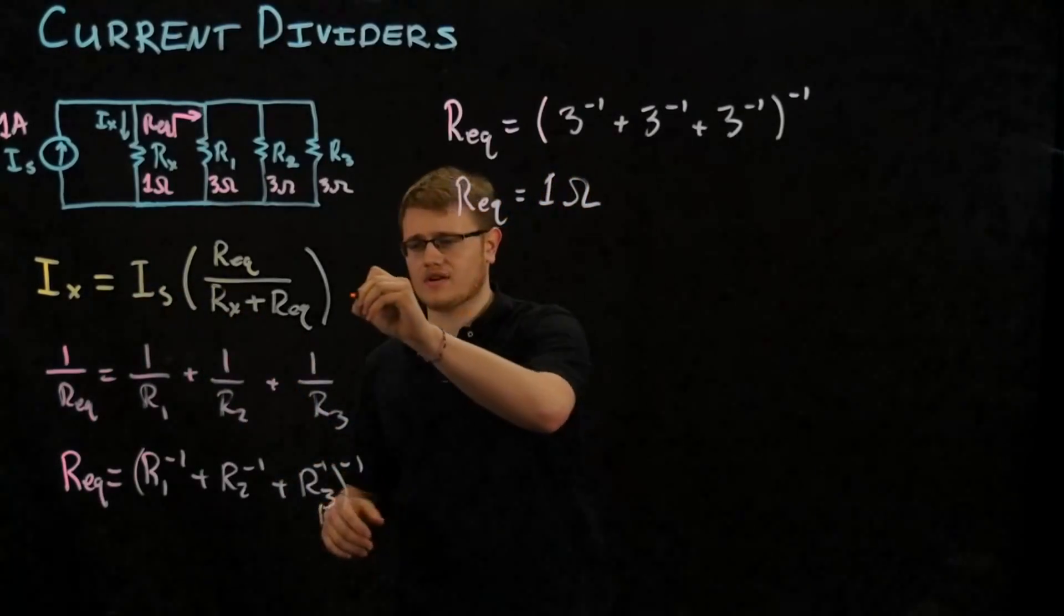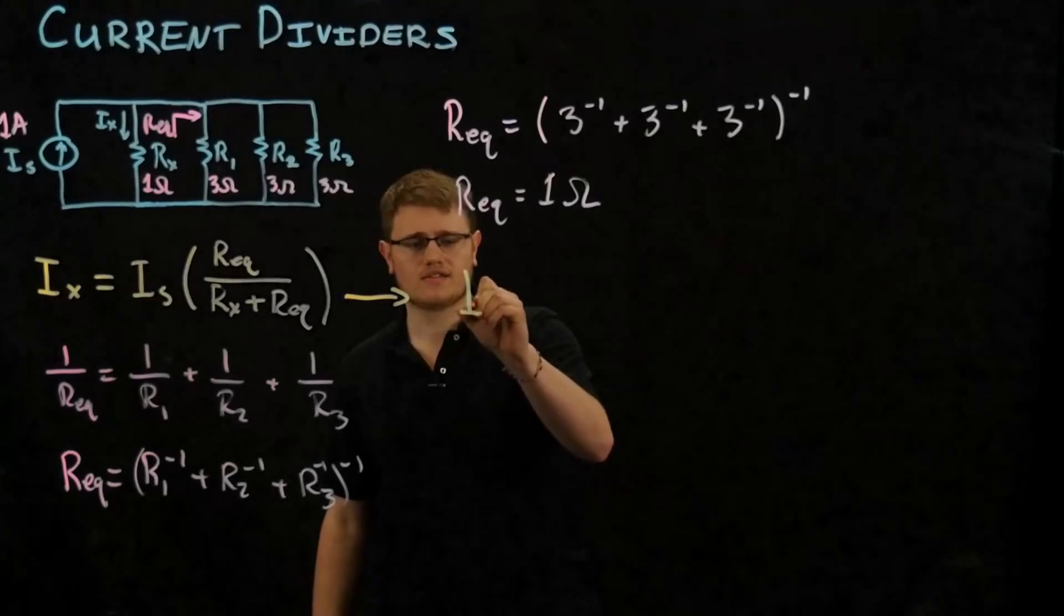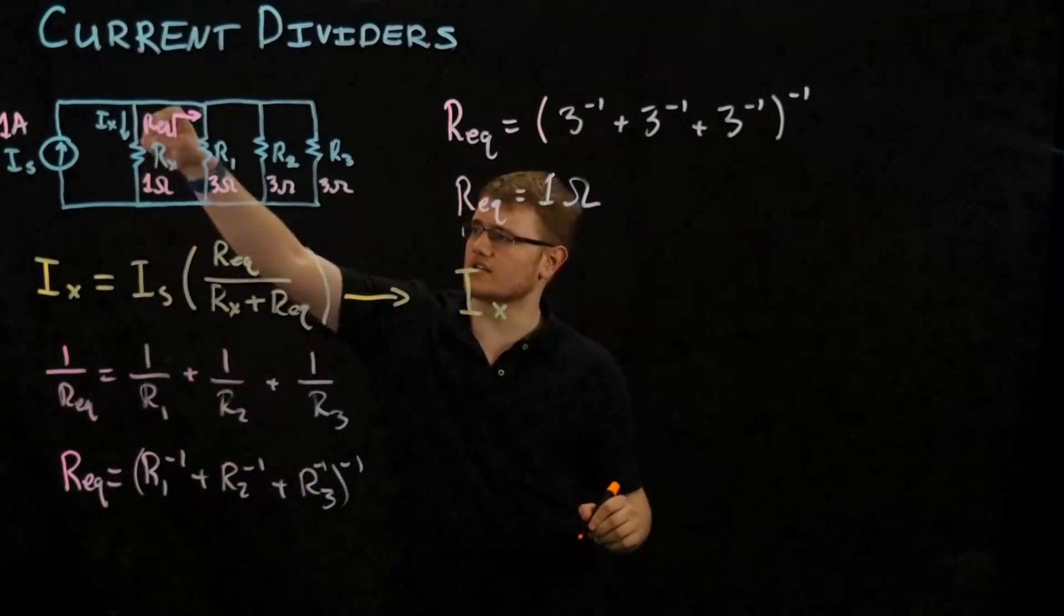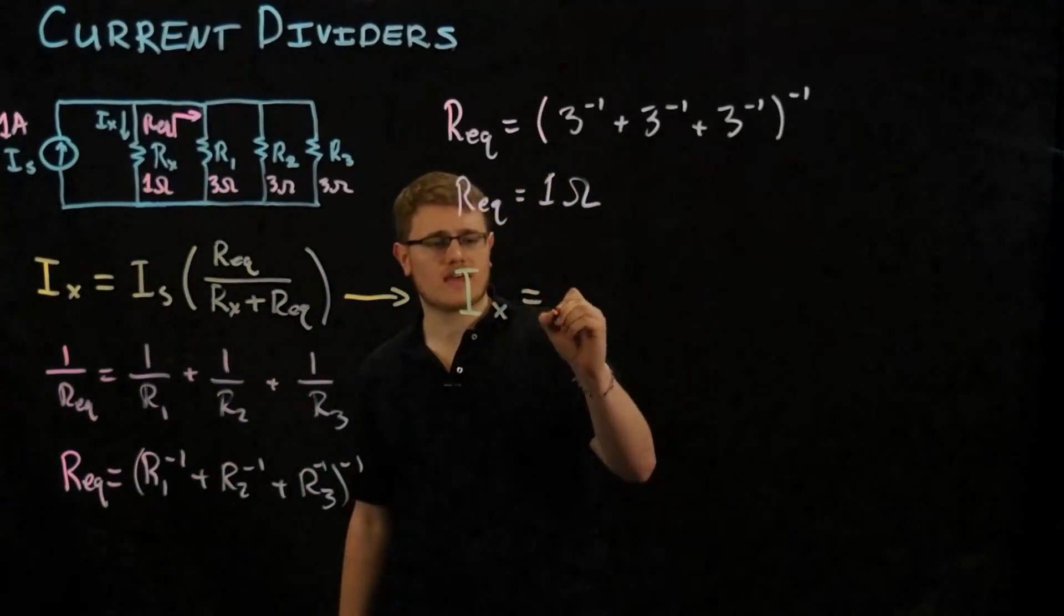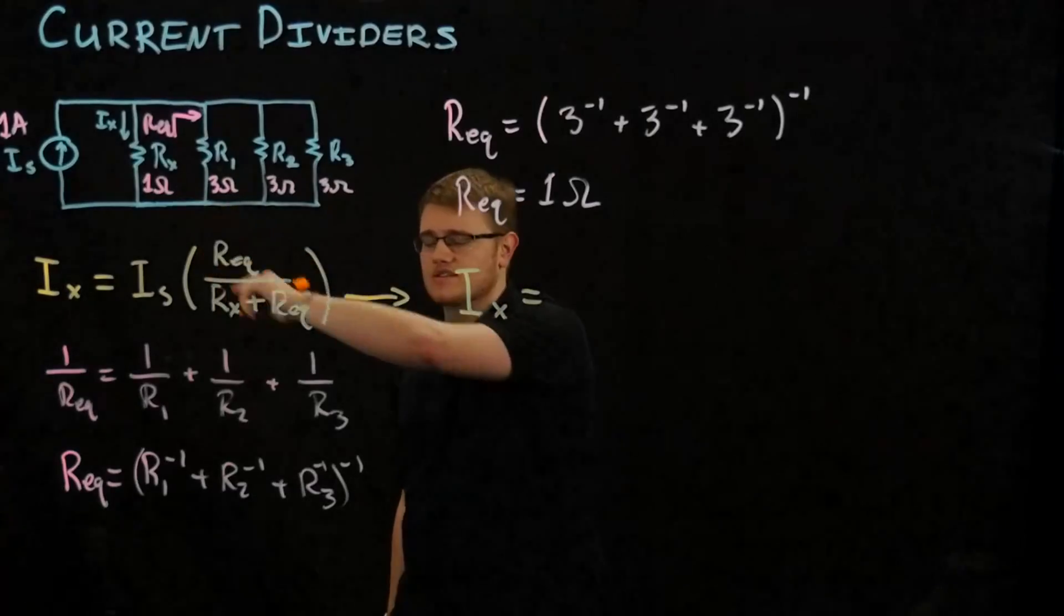So we have this over here. We have our current divider formula. We're going to use that. We want to find Ix, current going through Rx. We have the source current. As we said before, it's going to be one amp.